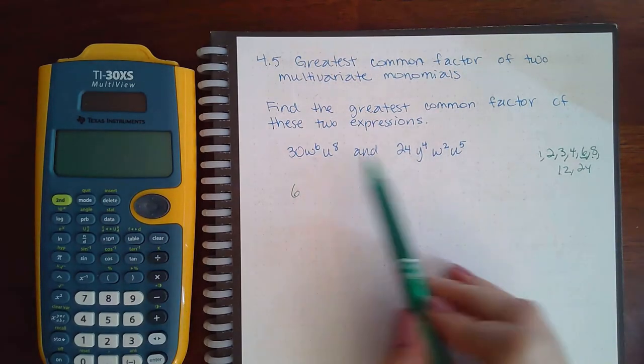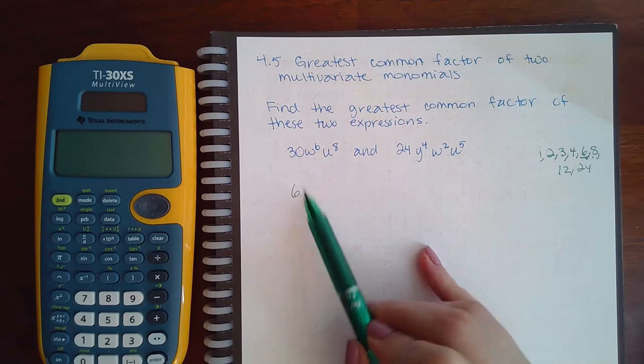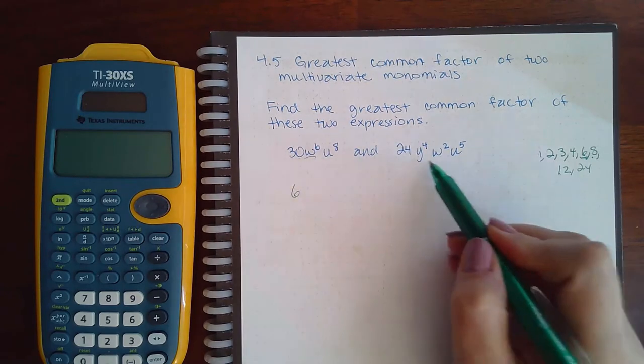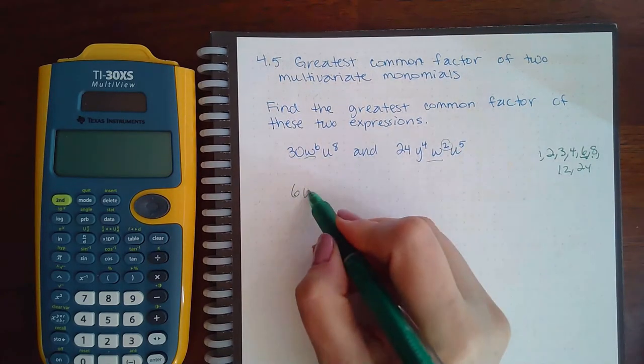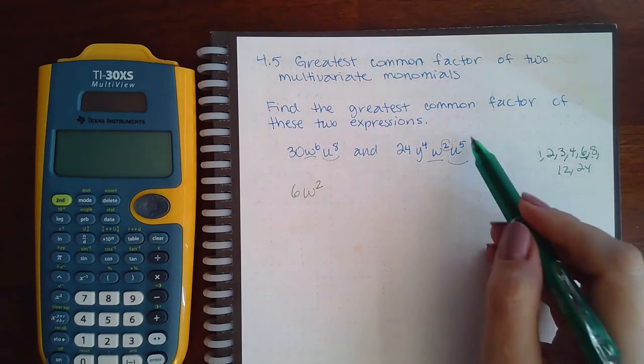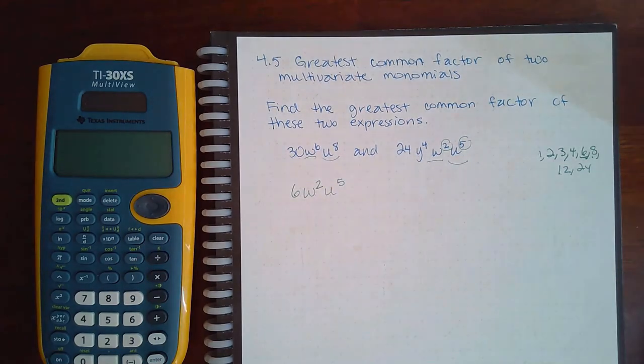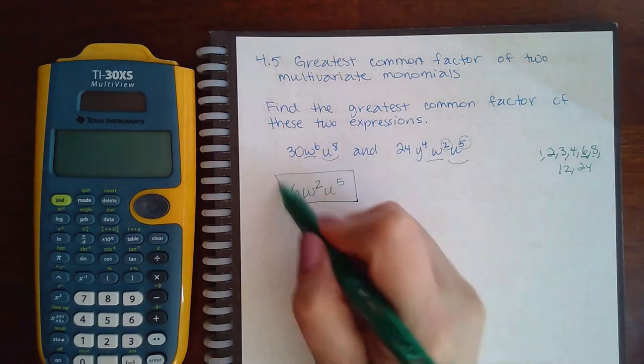Both of these expressions do not have a y, so I will not have a y in my GCF. They do both have w's, so I need to go with the lower exponent, which is w squared. And they do both have u's, so I'm going to go with the lower exponent, which is to the fifth power. So this would be the GCF.